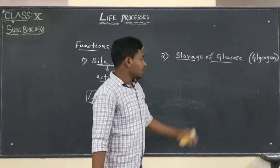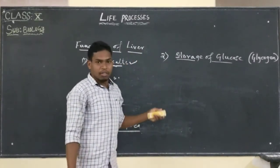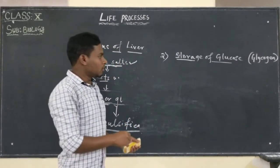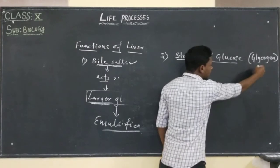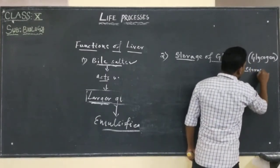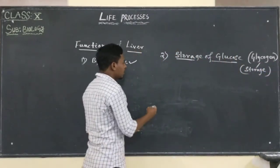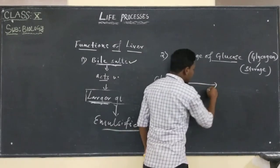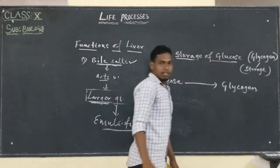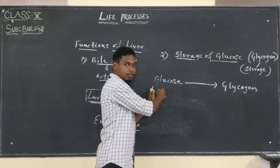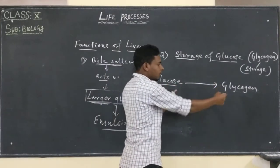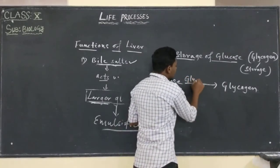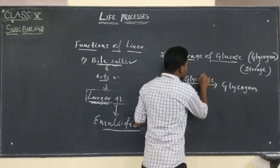When we consume food containing starch, fats, and proteins, the excess glucose is converted into the storage form known as glycogen. This takes place in the liver. Extra glucose is converted into glycogen, and this process is known as glycogenesis.